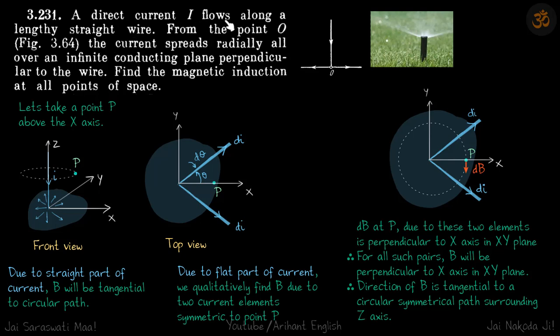A direct current I flows along a lengthy straight wire. From the point O, the current spreads radially all over an infinite conducting plane perpendicular to the wire. Find the magnetic induction at all points of space.